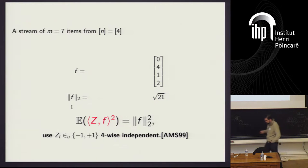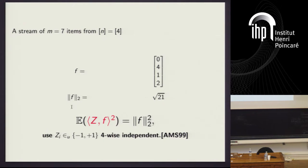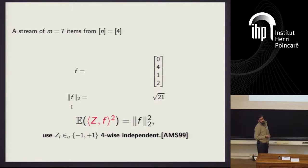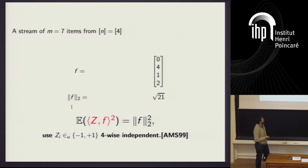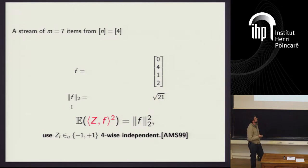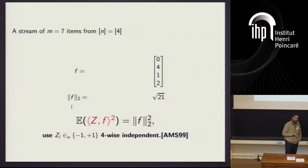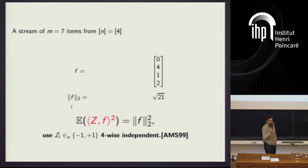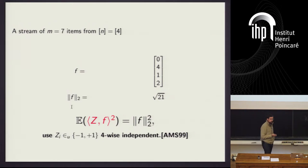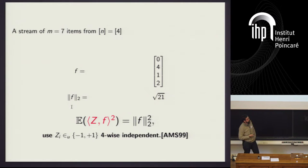There's a simple solution given by Alon, Matias, and Szegedy in 1996 — the first appearance of this. We just sample a random vector z and compute an inner product. We can do this because it's a linear function of f, so we can compute it on the stream. The expected value of the inner product squared is just the square of the 2-norm. To do this, we need to store the random vector z; using limited independence, we can do that with log n bits. We also store a single counter for the inner product, also log n bits. Taking averages and medians, we get down to log n bits of storage to output a constant factor approximation to F2.